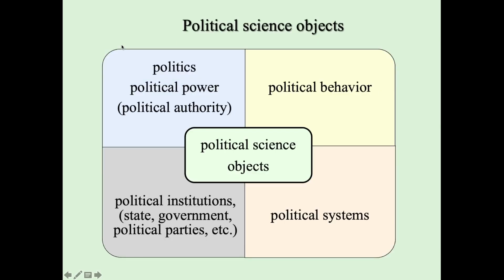What are political science objects? Political science objects are politics, political power, political authority, political behavior, political institutions like state, government, political parties, and so on, and political systems.